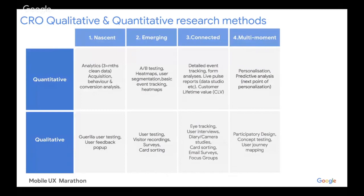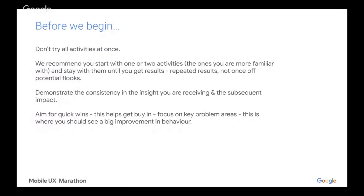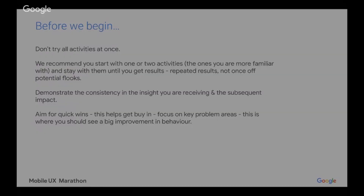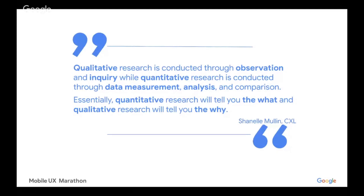As with other factors there are no shortcuts — you can't be doing advanced research methods without first learning the basics. Please remember: do not try all of these activities at once. We recommend starting with one or two activities, preferably the ones you're more familiar with, and then staying with them until you get results — repeated results, not once-off potential flukes. Aim for quick wins that help get buy-in and focus on key problem areas where you should see a big improvement in user behavior. Qualitative research is conducted through observation and inquiry, while quantitative research is conducted through data measurement, analysis and comparison. Essentially, quantitative research will tell you the what, while qualitative research will tell you the why. Both sets of activities complement each other and both should be adopted as part of your CRO insight methods.